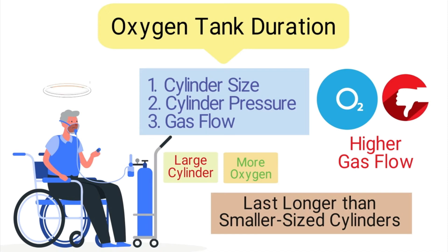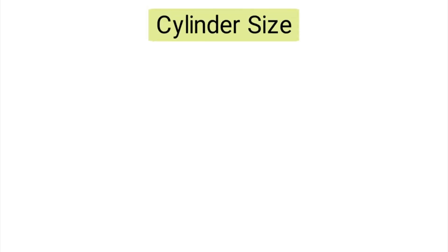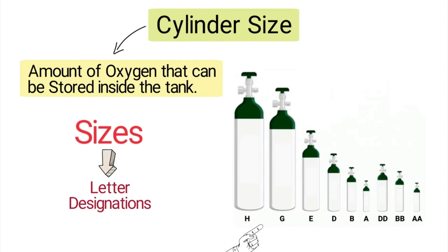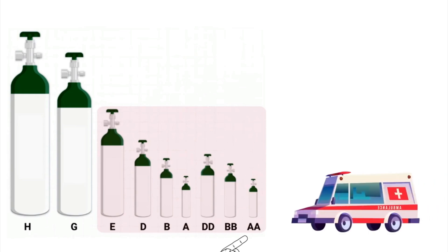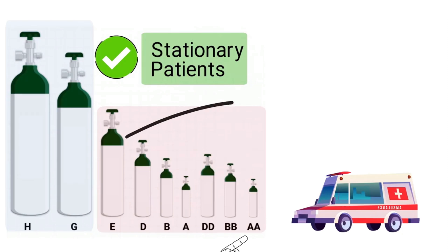The size of the cylinder dictates the amount of oxygen that can be stored inside the tank. The sizes are identified by letter designations including the H, G, E, D, B, A, double D, double B, and double A. Tank sizes E through double A are considered small cylinders and are most commonly used during patient transport. Tank sizes H through G are large cylinders and are better suited for stationary patients. Size E cylinders are the most commonly used oxygen tanks, especially in the hospital setting.